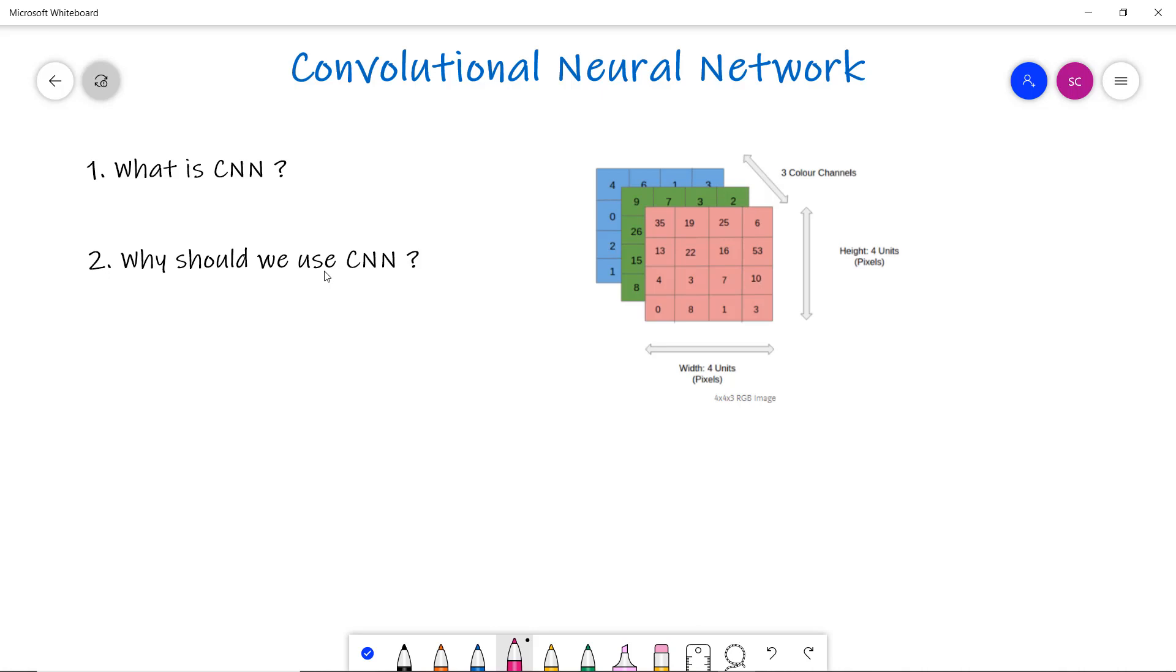It is quite similar to the basics of neural networks. CNN also has learnable parameters like neural networks—that is, weights and biases. So this is a brief overview of what is CNN.